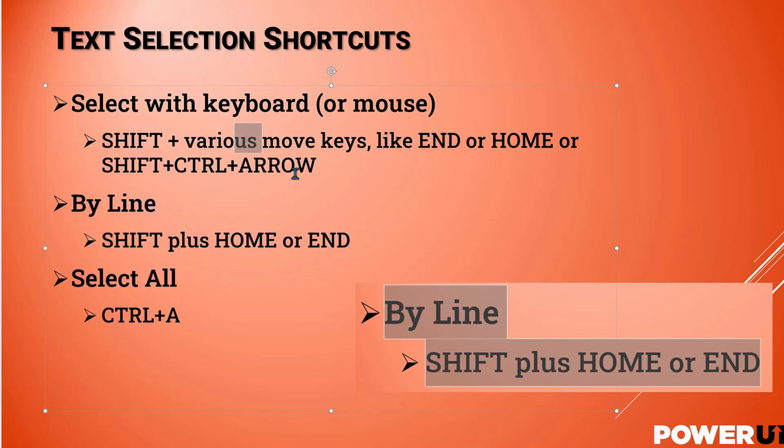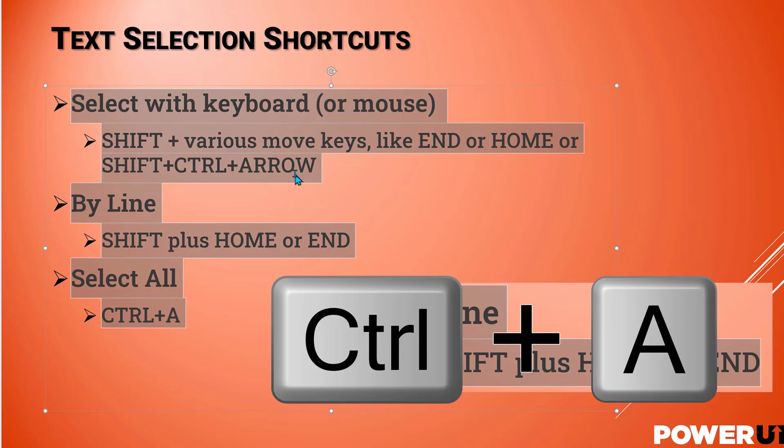The last text selection shortcut is select all text: control A. A for all will select all the text in the text box or the document. Control A is one of my favorites to select everything to make a global change.